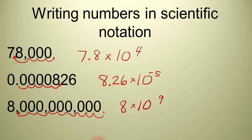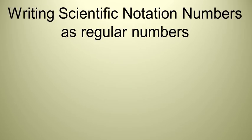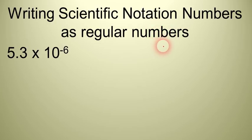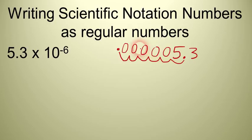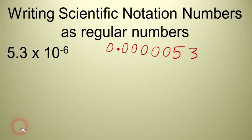Now let's try going the other direction — let's take some scientific notation numbers and write them as regular notation numbers. We have 5.3 times 10 to the negative 6th. First, think: is that a big number or a small number? It's a negative exponent, so it's a small number. We start with the 5.3 and move the decimal point to the left 6 places: 1, 2, 3, 4, 5, 6. We stick a decimal point there and fill in placeholder zeros. The answer is 0.0000053.